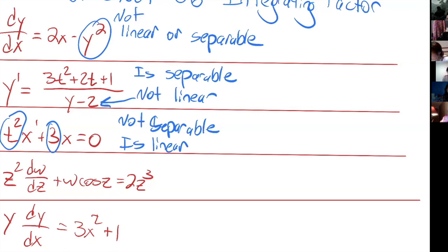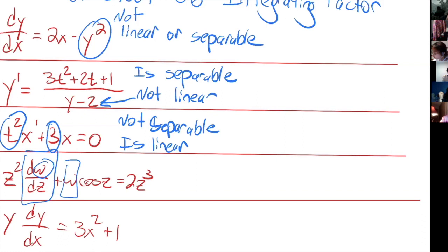For this one the dependent variable is W and Z is the independent variable. We've got two terms that have W in them, and the thing multiplying each of those W's doesn't depend on W. So this one is linear as well, and I don't think you're going to have any luck separating this one.